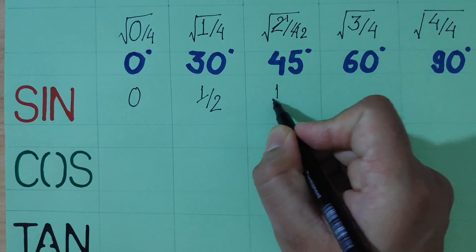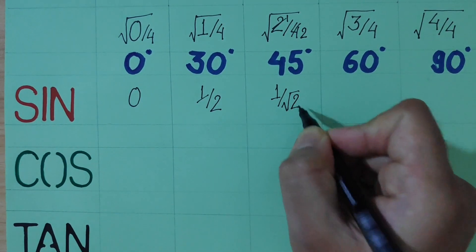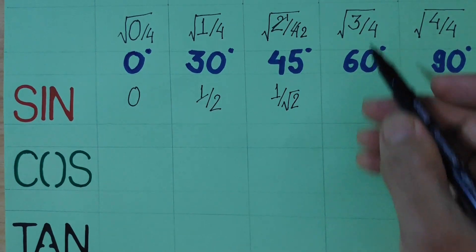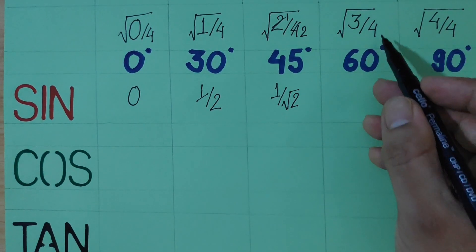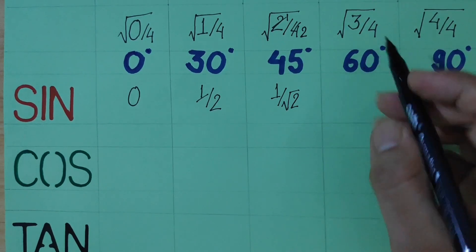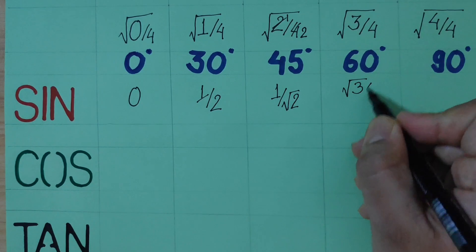Let's simplify, square root of 3 over 4 is root 3 over 2. Sin 60 is root 3 by 2.